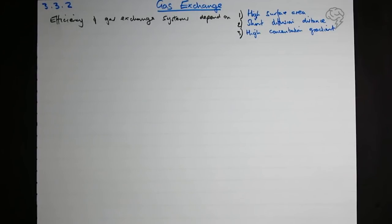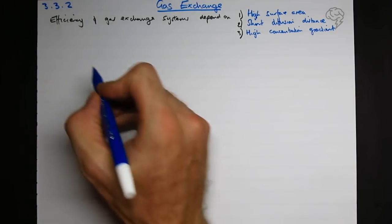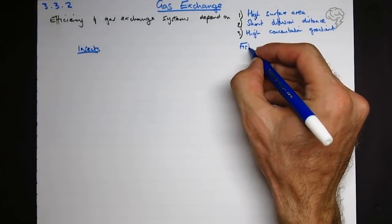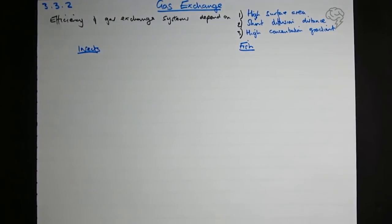All the answers on this topic revolve around these three things and how organisms have organs that manipulate diffusion to get their oxygen for respiration. This video we're going to look at insects and fish. Single-celled organisms, as mentioned in the previous video, use simple diffusion over their large surface area to volume ratio.